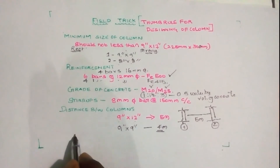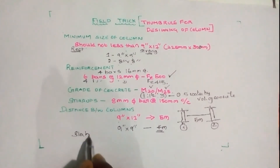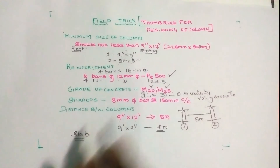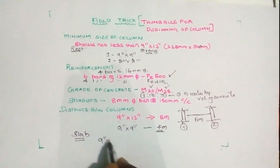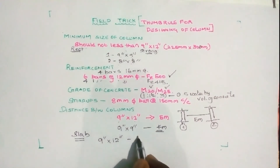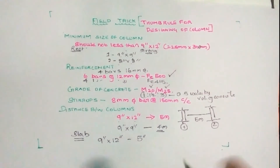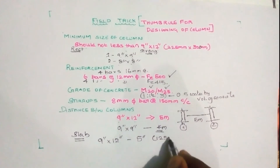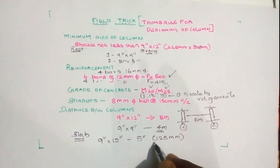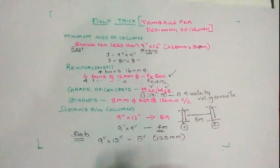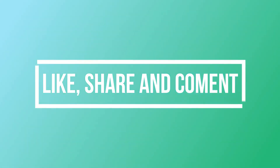For the slab, the dimensions are 9 inches by 12 inches. We can use a slab thickness of 5 inches, which equals 125 mm. This is the standard thickness of the slab used with this column design.